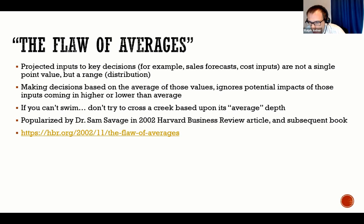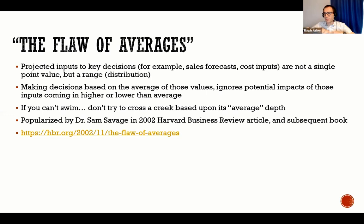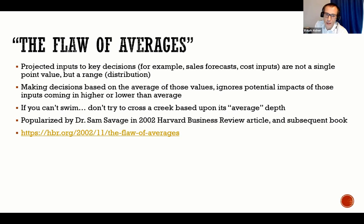Making decisions based on a single point value of those inputs — typically the average — ignores the impact if those inputs come in much higher or much lower. Dr. Sam Savage, an operations research scientist, popularized the phrase 'the flaw of averages,' a takeaway from the law of averages in mathematics. He wrote about it in Harvard Business Review and also a subsequent book. His phrase: if you're six feet tall and can't swim, it's okay to walk across a creek if it's four feet deep the entire way. But if it's an average of four feet — some parts two feet, some parts twenty feet — you need to understand the distribution of those depths, because you'll drown. Purely looking at the average rather than the distribution could literally be a killer.